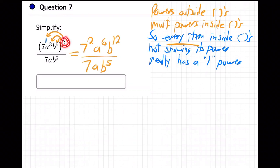So that power, that two outside the parentheses multiply the one, the three, and the six. So don't forget to give that seven a one power. That's a common, common mistake, but every item inside parentheses not showing its power really has a one power.